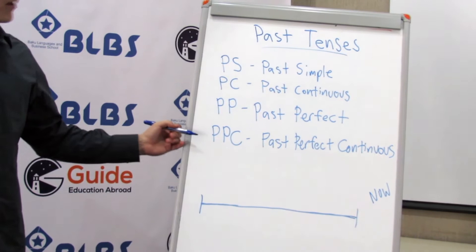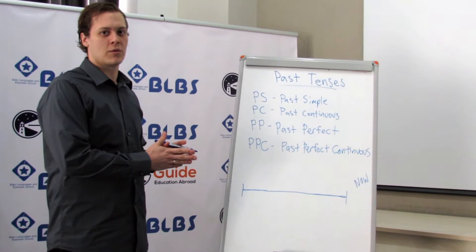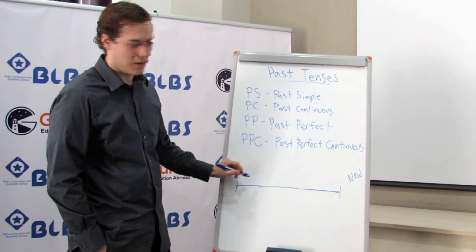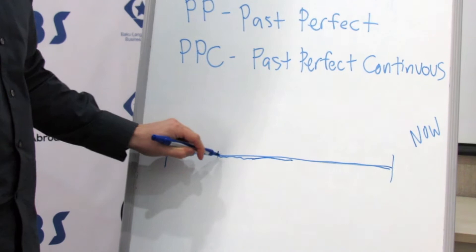The past simple is the most used tense when telling a story. This is used when you have just a sequence. So in my story, last week I went home and I turned on the TV and I watched the news. These events happened in a sequence, so we used the past simple form.